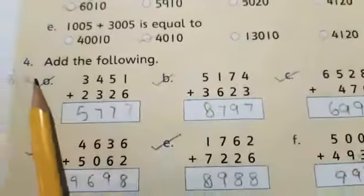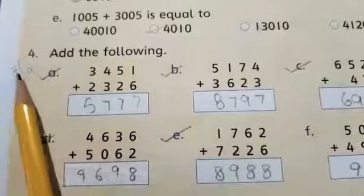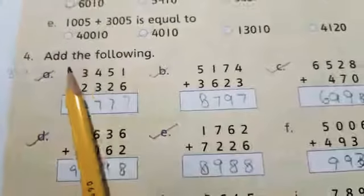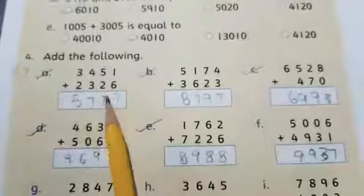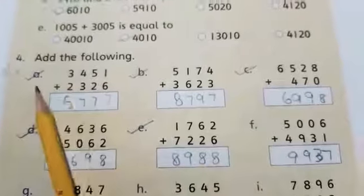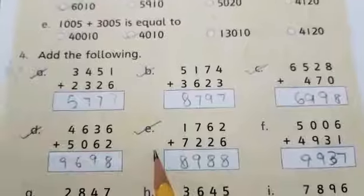Students, on page number 41 we are doing exercise 2a, question number 4. So write down date and day like this. Question number 4 is add the following. These are simple four digit additions and we have to complete part a till e.